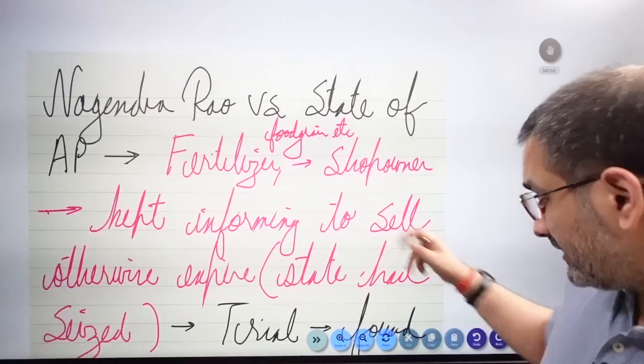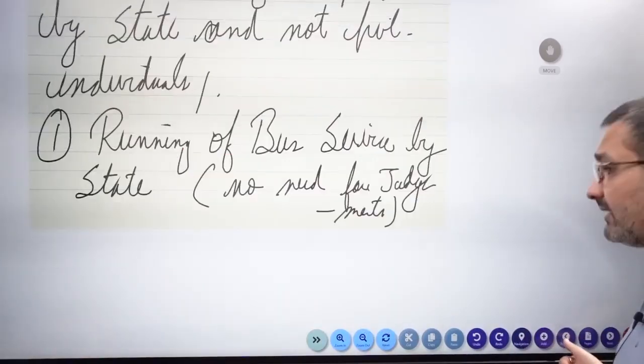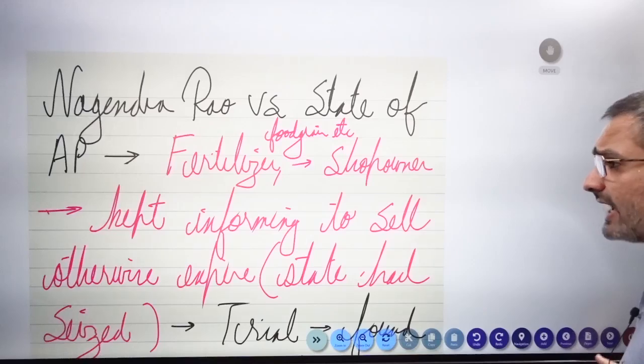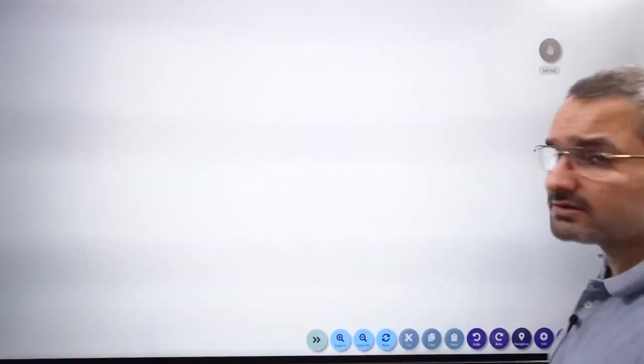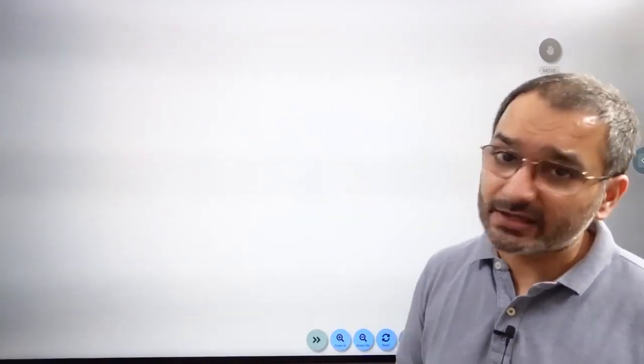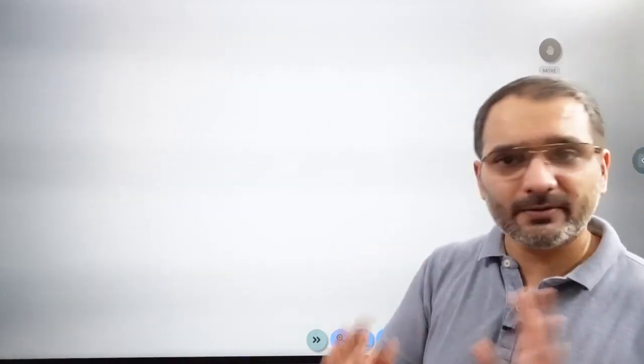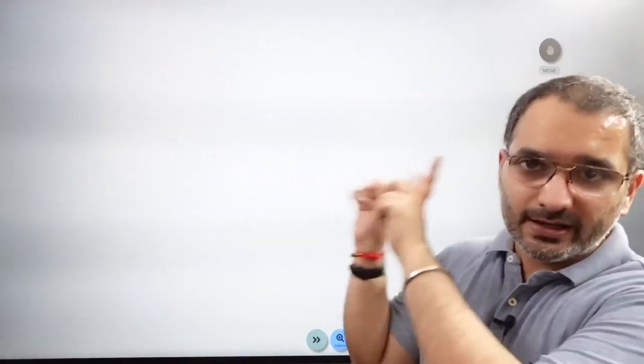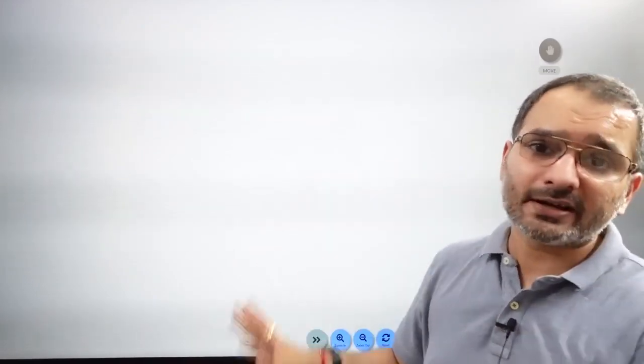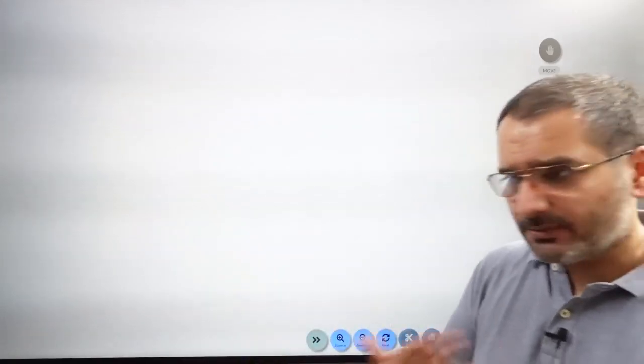This is an important question that pops up often in law optional. This question has five different variations - liability of state, tortious liability, etc. For all of these, this is your set answer. Prepare your answer and law optional will be absolutely no problem. Okay, let's keep on preparing our answers. Take care, bye.